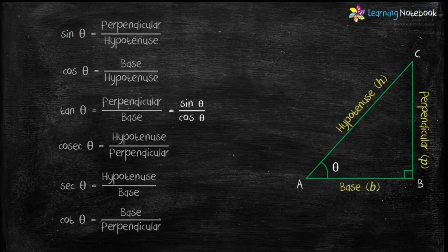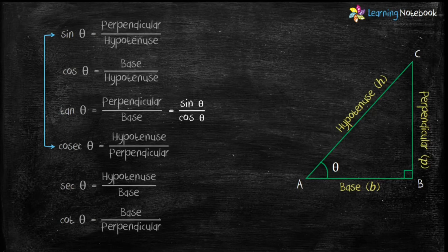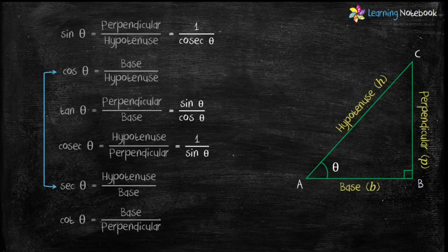Now let's see a few more relations. Sin theta equals perpendicular upon hypotenuse, and cosec theta equals hypotenuse upon perpendicular, so they have an inverse relation between them: sin theta equals 1 by cosec theta, and cosec theta equals 1 by sin theta.